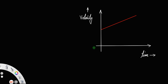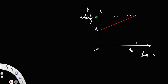Now suppose at the start of the motion, the initial time is t₁ equal to 0, and after a particular instant we have the final time t₂, let us say equal to t. Initially, when time t₁ equals 0, the velocity will be v₀ — that is the initial velocity. After time t, the final velocity is v. So this length represents v₀ and up to this length it is v.